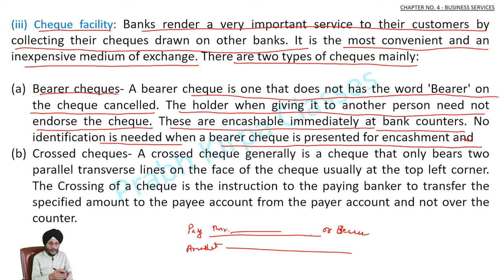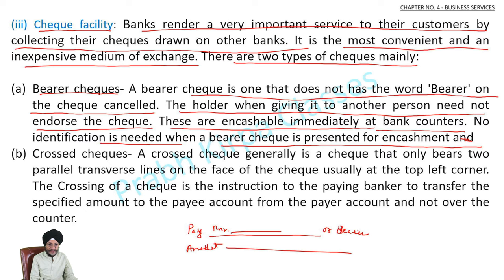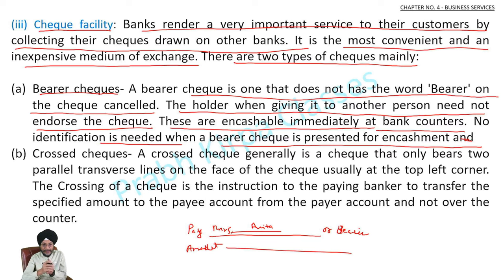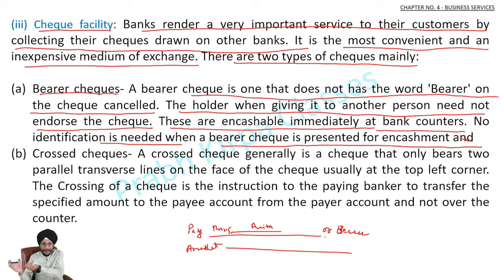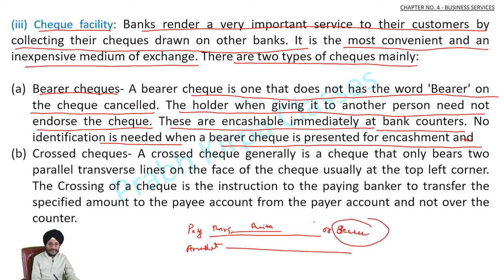For example, you may have drawn a check in the name of Mrs. Anita, but if you have not cancelled 'bearer', Mrs. Anita may give it to another person who then becomes the bearer — the holder of the check. Anita does not need to write anything on the front or back of the check. The bank will make payment to anyone who presents this check.